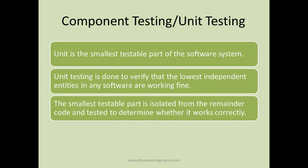The smallest testable part is isolated from the remainder of the code and tested to determine whether it works correctly. In component testing, these smaller testable items are not tested as an integrated system — they are isolated and tested individually. Suppose there are hundreds of classes in a software; these classes are separated and tested individually, not as integrated code.